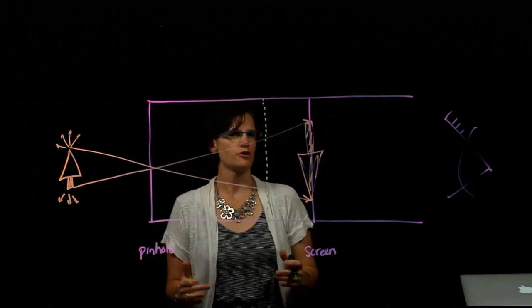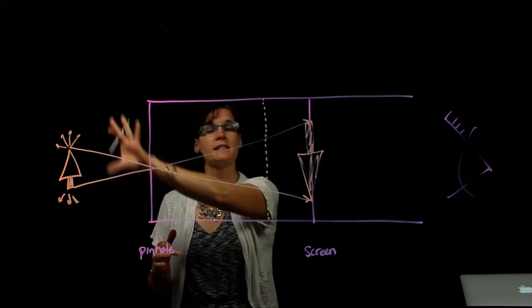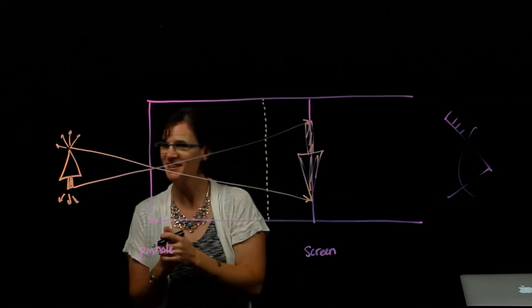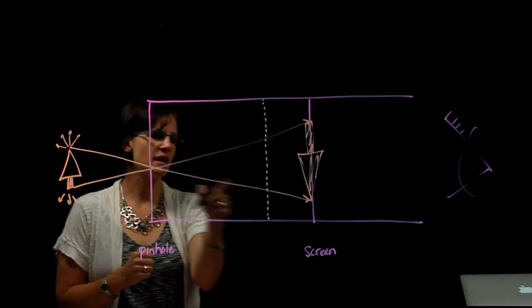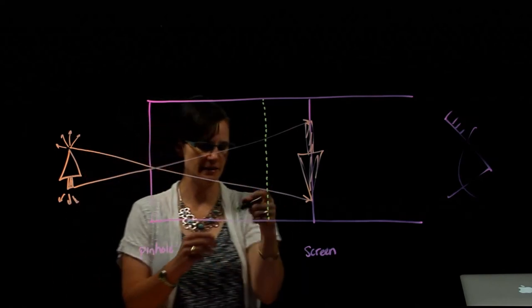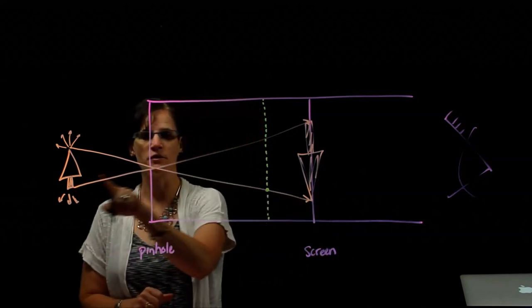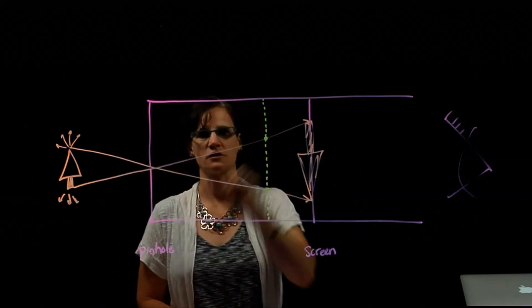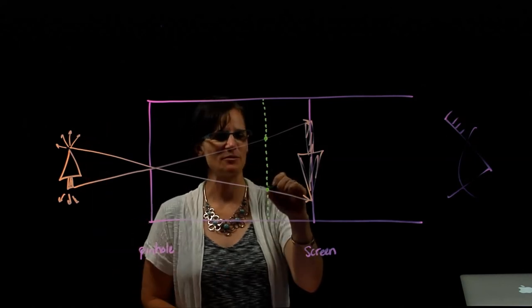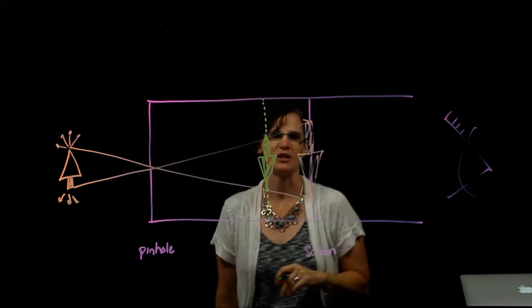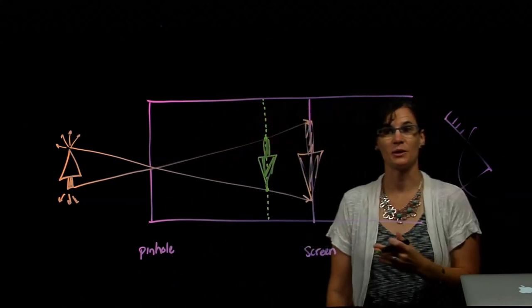That doesn't change what happens with the rays of light. They still enter the same pinhole. The same number still enter based on the size of that pinhole. But as they come through, now the top of the tree hits at this location on the screen. The bottom of the tree hits at this location on the screen. All the rays of light in between hit the screen and my tree image is produced on that screen.